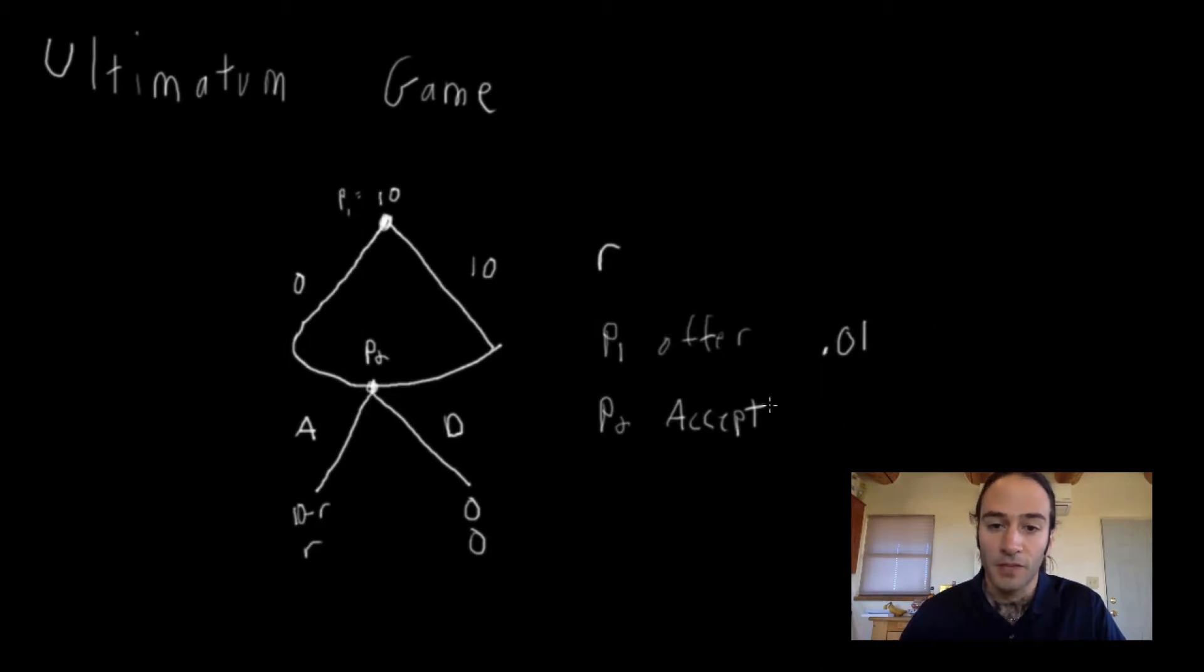In that case, Player 1's payoff, so this gives him a payoff of $9.99, and Player 2's payoff is a penny. And the reason we see that this is Subgame Perfect is because if Player 2 denies any offer, he gets 0. So as long as the amount that Player 1 offers is better than 0, it would be in Player 2's best interest to accept.